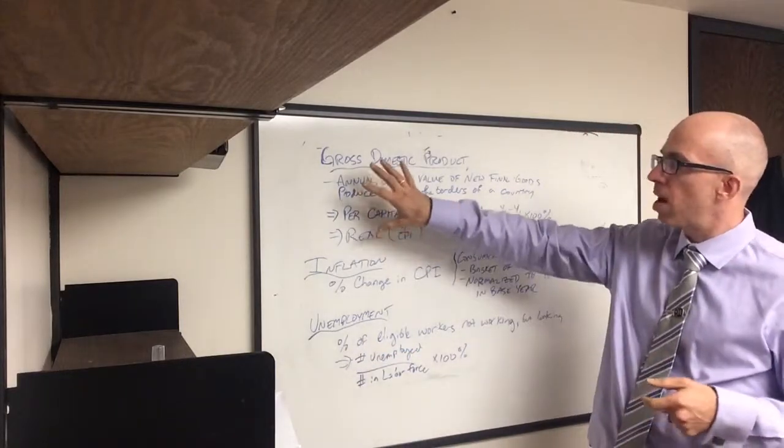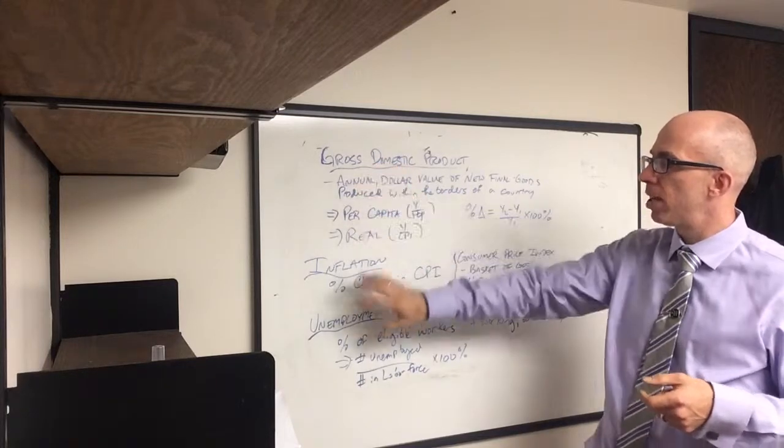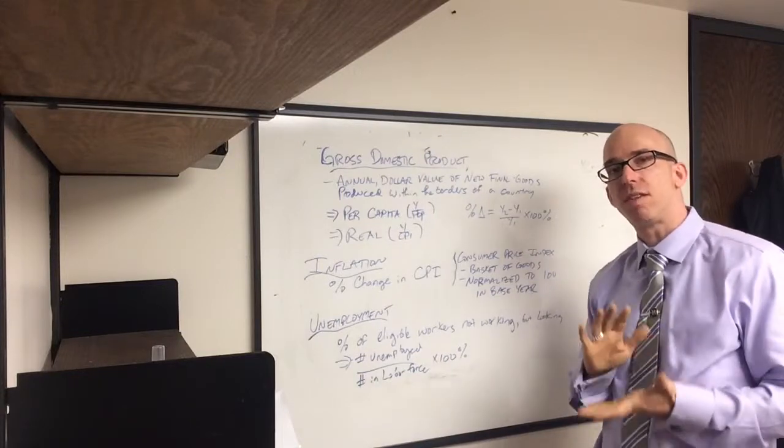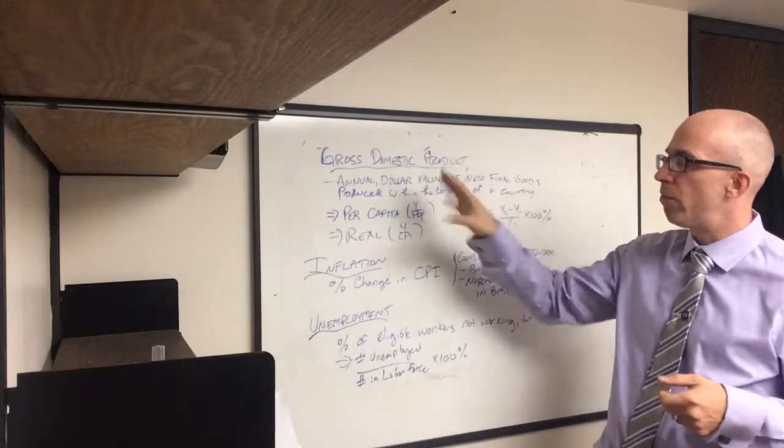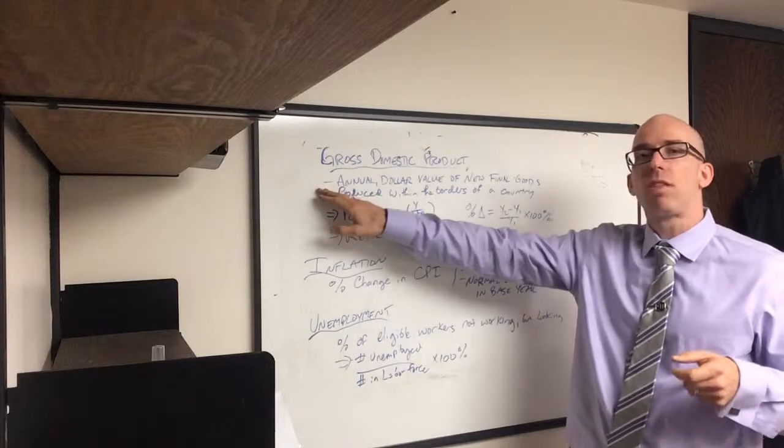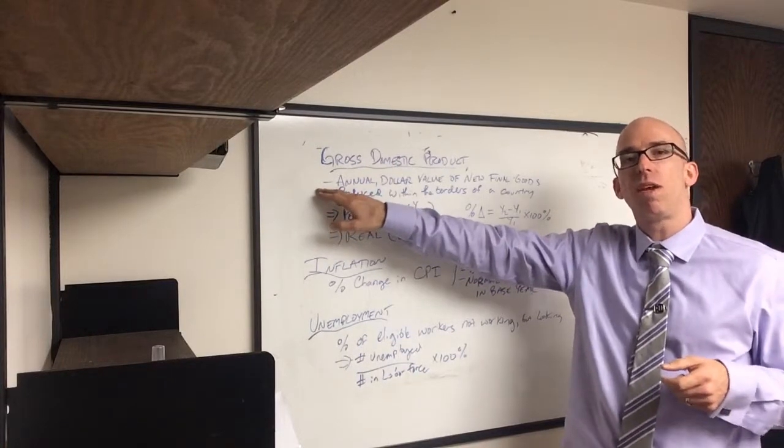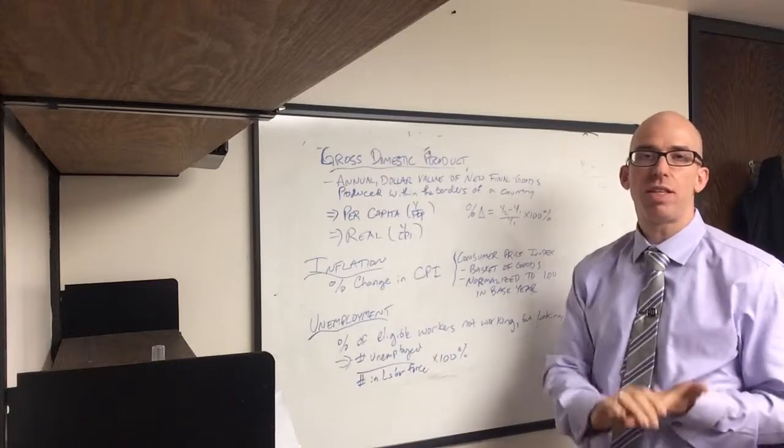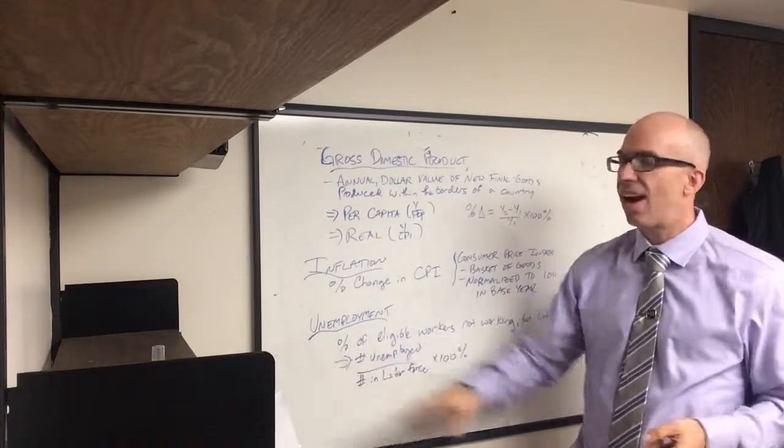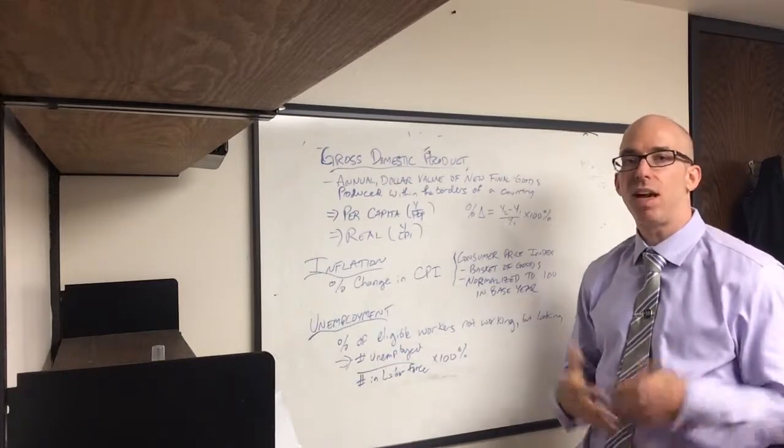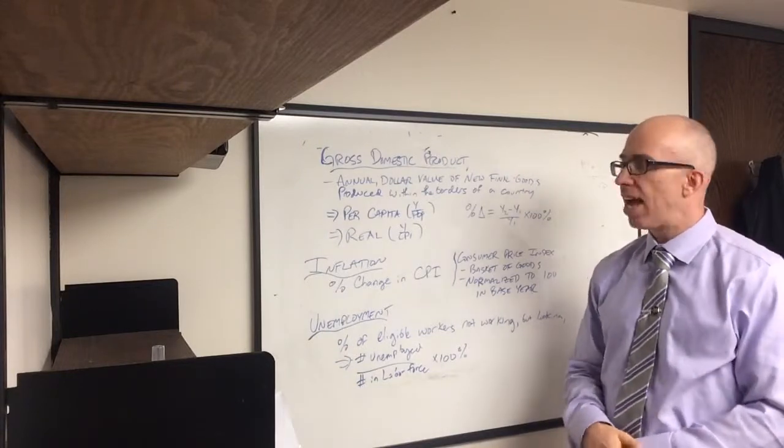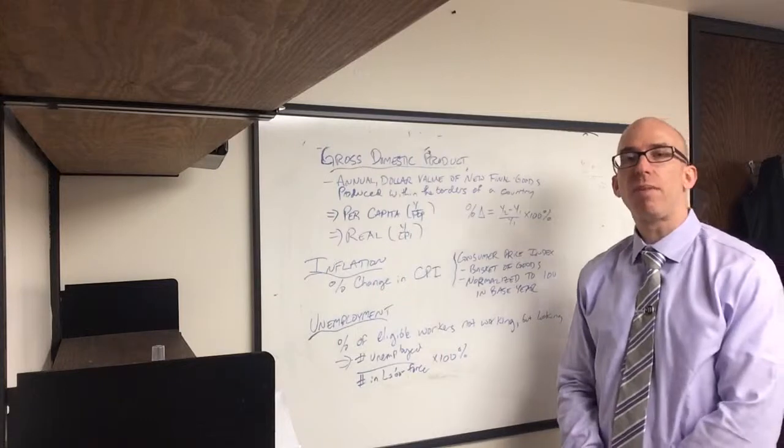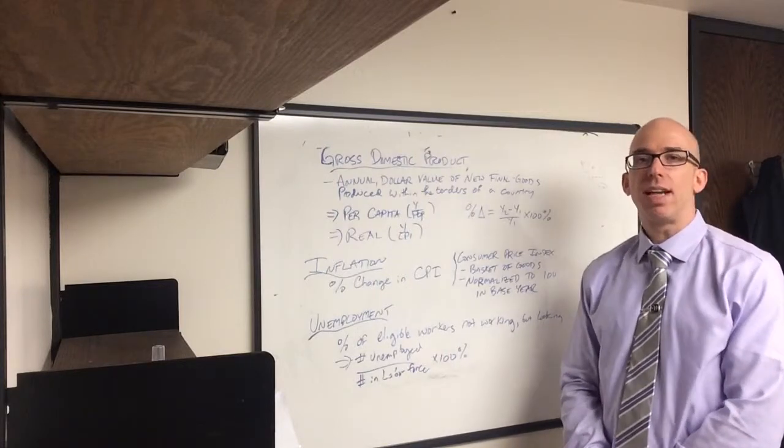So gross domestic product is income and spending and output. Inflation is the percent change in prices. Unemployment is the number of workers who wish to work. These are the big three. Typical figures for the U.S.: 2 to 3 percent per year is a good growth measure of real GDP. 2 percent inflation is targeted usually by the U.S. and other countries. And 5 percent unemployment is the target number for the U.S. So that's how to measure and understand the three main measurements of macroeconomic performance.